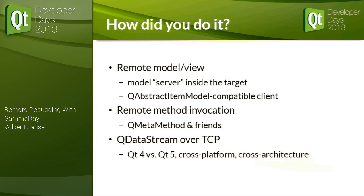Unfortunately there are some minor details that make this quite tricky. The first one is QModelIndex — a very transient data structure that you can acquire, do something with, and it becomes invalid as soon as you enter the next event loop. If there's a TCP socket in between, you always enter the event loop. So QModelIndex is kind of useless. The first thing we needed to do is map that to something more persistent and independent of internal pointers — basically just a path through the model.